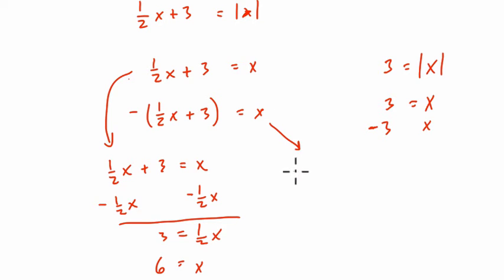In the other case, if we distribute the negative sign, we get negative 1 half x minus 3 equals x. So now I'm going to add 1 half of x, so we get 3 halves x equals negative 3.